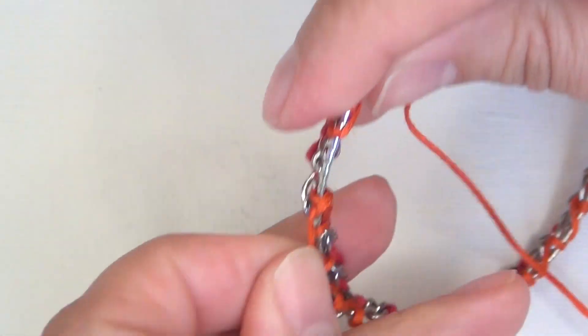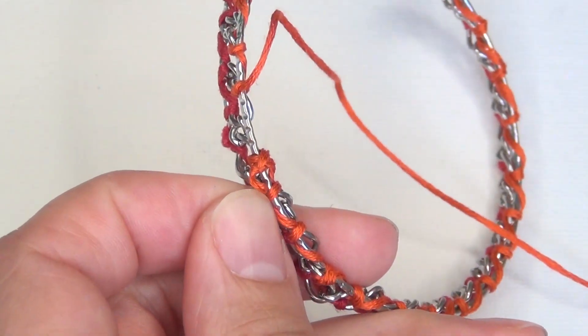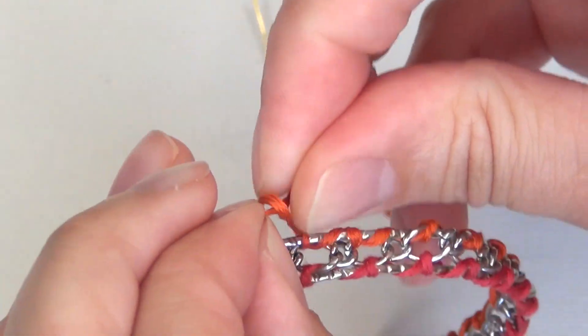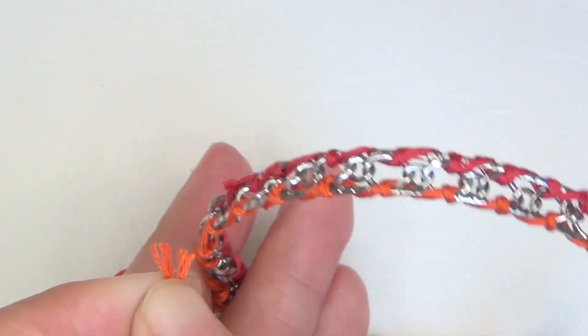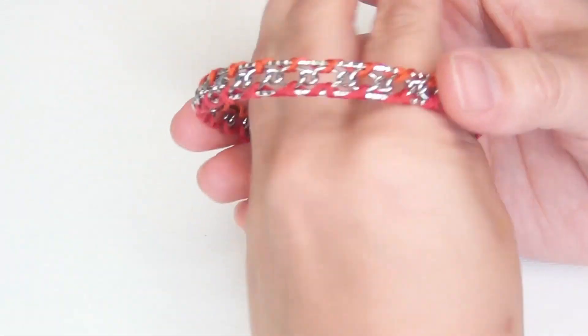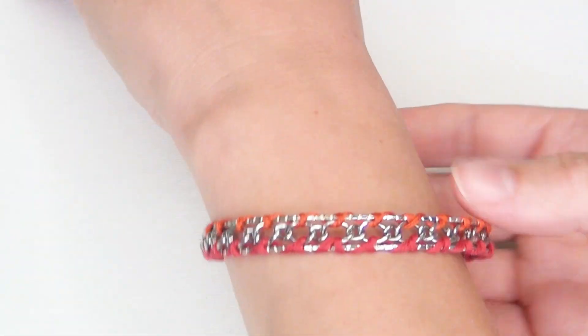Then tie it off the exact same way you tied off the other side and then cut off the excess thread. If you want you can seal the knots with some clear nail polish or super glue, but I leave it just as is. And that is your finished bracelet. Thanks for watching. If you want to see more DIYs like this one let me know in the comments below.